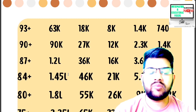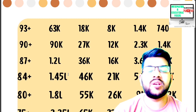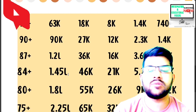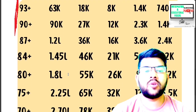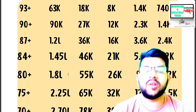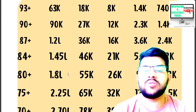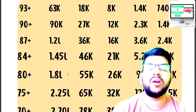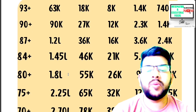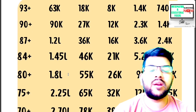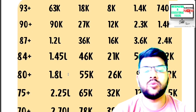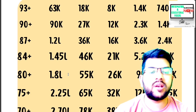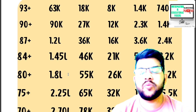For 80 plus percentile: CRL under 1.8 lakh, OBC 55,000, EWS 26,000, SC 9,000, ST 4,200. For 75 plus percentile: CRL under 2.25 lakh, OBC under 65,000, EWS under 32,000, SC under 12,000, ST under 5,500.